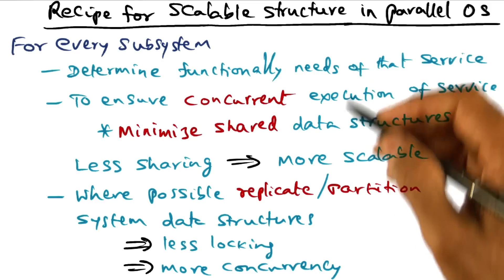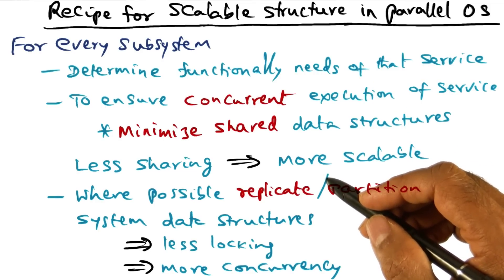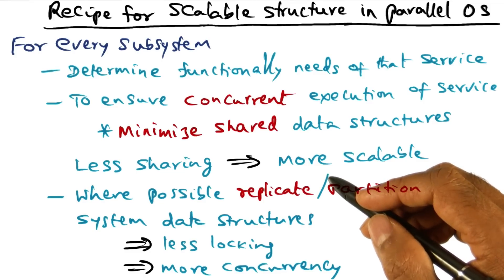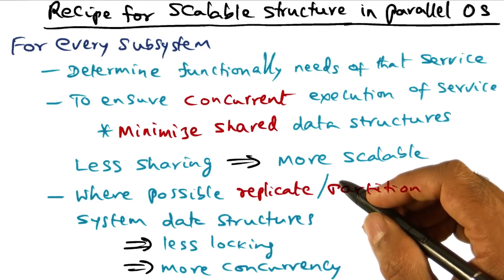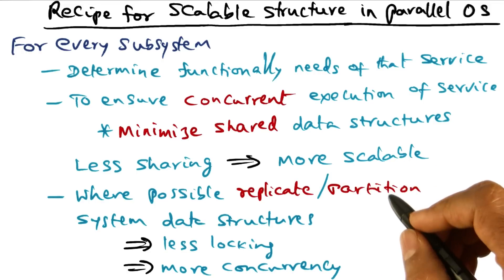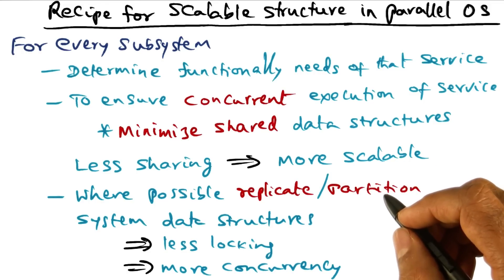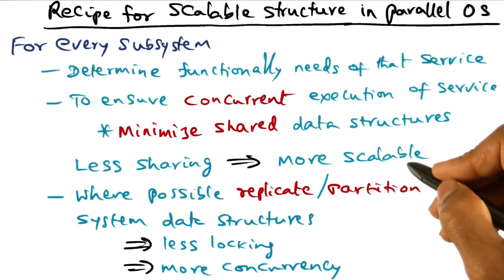We'll keep this recipe and the principles we talked about in mind and discuss one particular service, namely the memory management subsystem, and how we can avoid serial bottlenecks using the techniques proposed in one of the assigned papers called the Tornado system. The key property is: less sharing leads to a more scalable design.